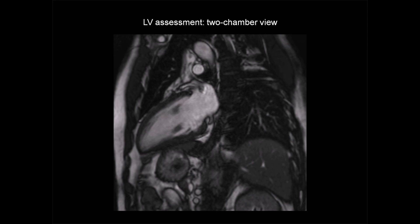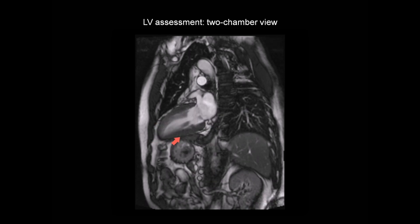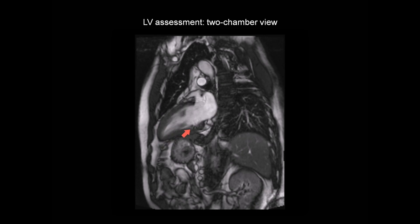Moving on to the two-chamber view, we have the left ventricle, mitral valve and left atrium, with basal, mid and apical segments. We have the basal anterior, mid-anterior and apical anterior segments, and the basal inferior, mid-inferior and apical inferior segments — so the anterior wall and the inferior wall seen in the two-chamber view. The cine CMR image allows us to assess systolic function, and wall motion and myocardial thickening are normal in this image.